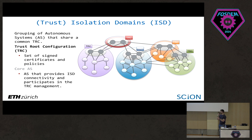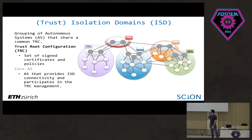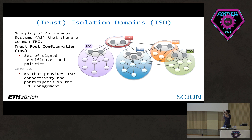Some key terminology: SCION organizes itself into trust isolation domains, or ISDs for short. These are groups of autonomous systems that share a common trust root configuration — they agree on a set of routing policies. Core ASes are responsible for managing and updating the TRCs (trust root configurations) and provide peering with other ISDs. The important point is that ISDs isolate trust — not any other kind of isolation.